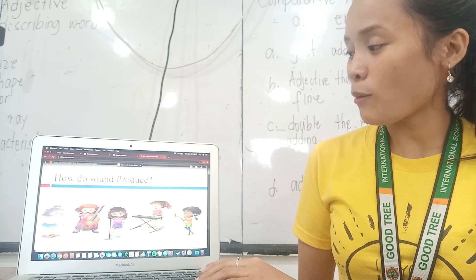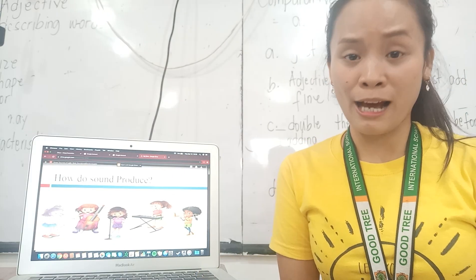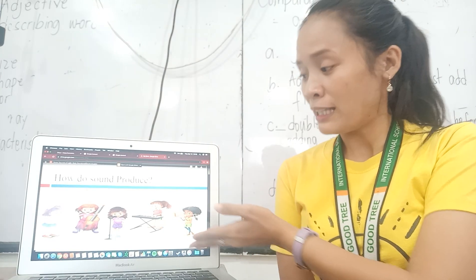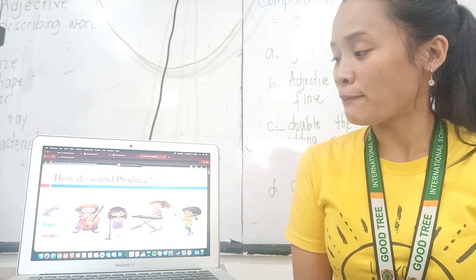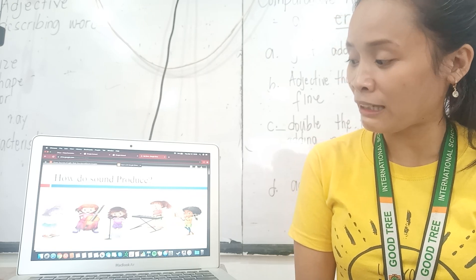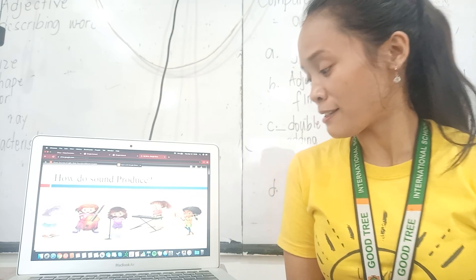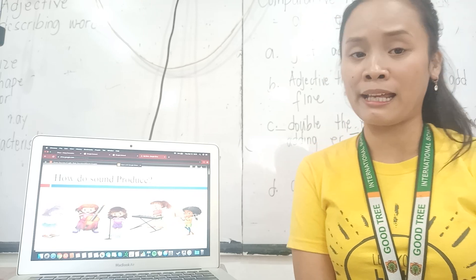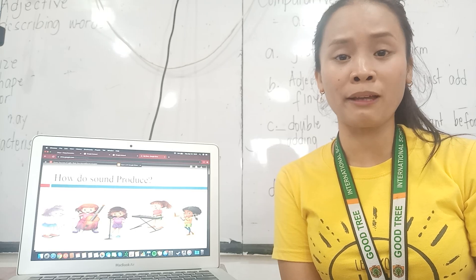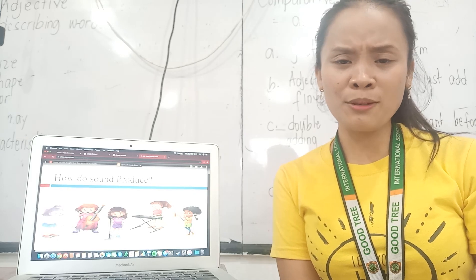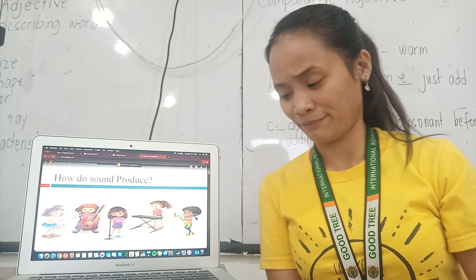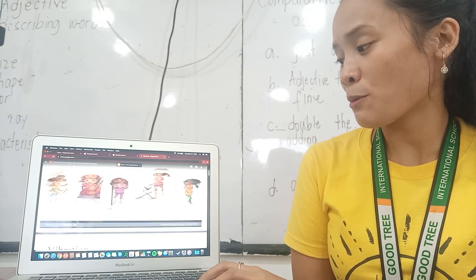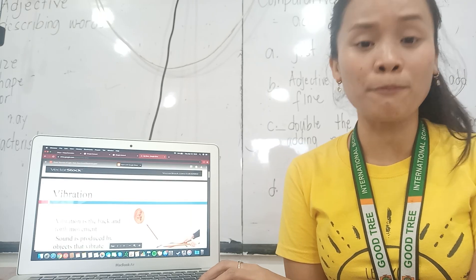The question is: how is sound produced? Do you know? Here you can see in the pictures, kids playing musical instruments like saxophone and keyboard, or someone is singing. Whenever you play instruments, you can hear sounds. So how is sound produced? Sound is produced through what we call vibration.